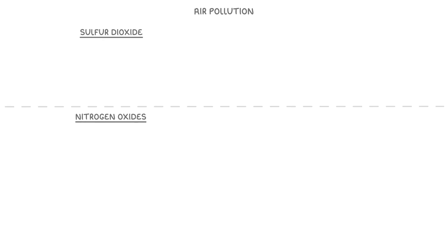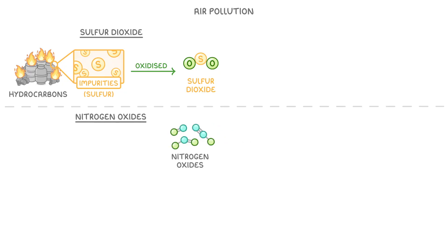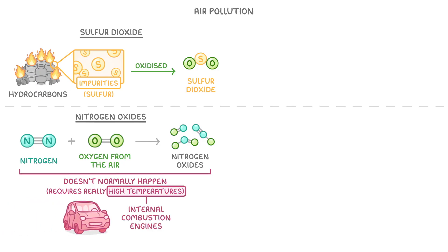Pollutants like sulphur dioxide and the different nitrogen oxides meanwhile are made a bit differently. Sometimes the hydrocarbons that we burn have impurities in them, like atoms of sulphur, so when we burn them, the sulphur gets oxidised to sulphur dioxide gas. Meanwhile, nitrogen oxides are formed when nitrogen and oxygen from the air react together. This doesn't normally happen, because it requires really high temperatures for them to combine. However, these high temperatures are often reached inside internal combustion engines, like those of cars.